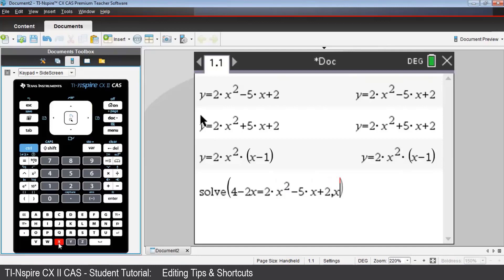So, the x coordinates of the points the line y equals 4 minus 2x and that first quadratic, y equals 2x squared minus 5x plus 2, have in common are negative 1 half and 2.